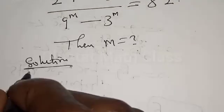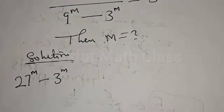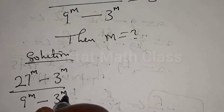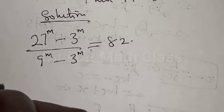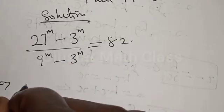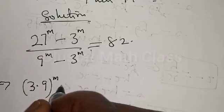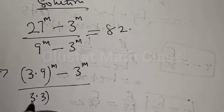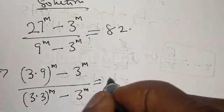We have 27 raised to power m minus 3 raised to power m, over 9 raised to power m minus 3 raised to power m, equal to 82. Now, 27 can be expressed as 3 times 9, raised to power m, minus 3 raised to power m, over 9 expressed as 3 multiplied by 3, raised to power m, minus 3 raised to power m, equal to 82.